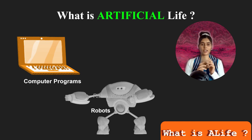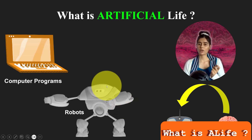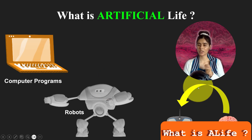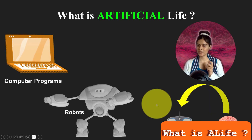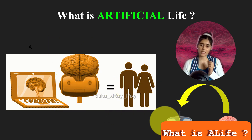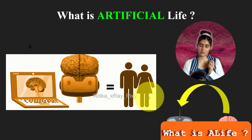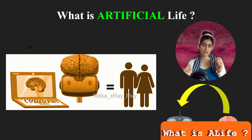Artificial life is a scientific field where researchers create computer programs or robots that act like living things. Researchers use different models, simulations, or sometimes physical environments to create lifelike behavior or systems that mimic aspects of biological life. Researchers try to make these artificial beings behave, adapt, and interact with each other like living creatures do, and it helps us to understand life and can be used in various fields like robotics.